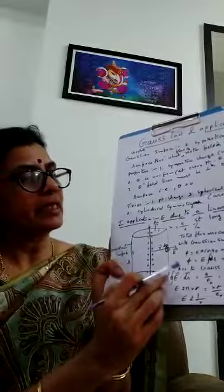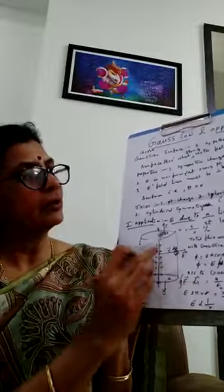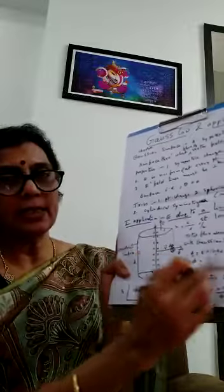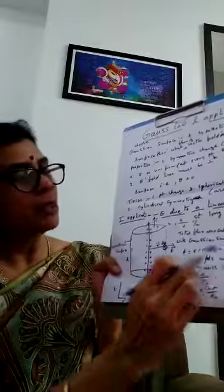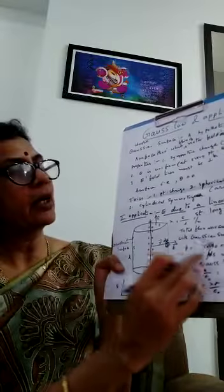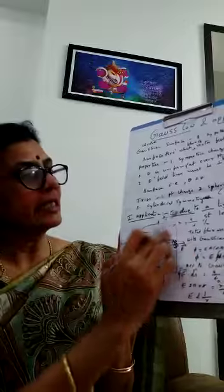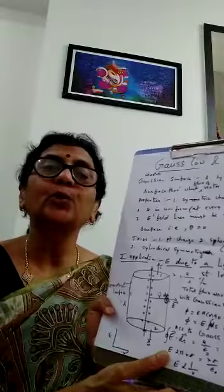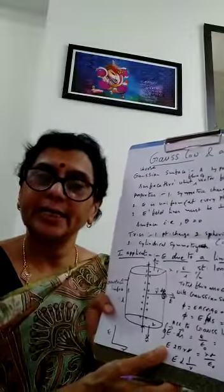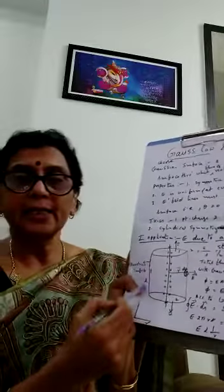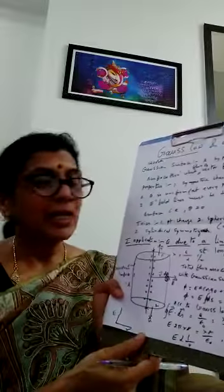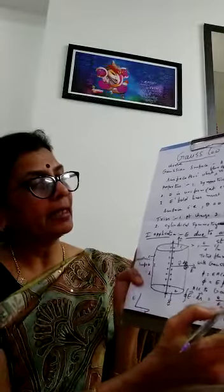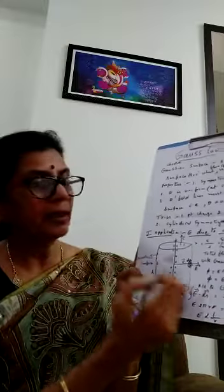The flux through the curved surface, φ₃, equals ∮ E · dS. Since E is constant, we take it outside: E ∫dS cos θ. Since theta is 0, cos θ = 1, so it becomes E ∫dS. The integral of dS over the curved surface of the cylinder is 2πrl, where r is the radius and l is the length of the Gaussian cylinder. So φ₃ = E × 2πrl, and this is the only flux that exists.